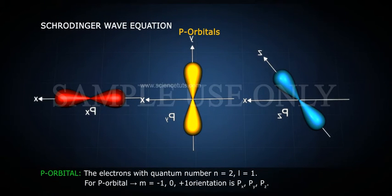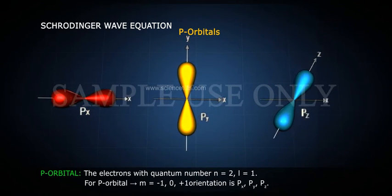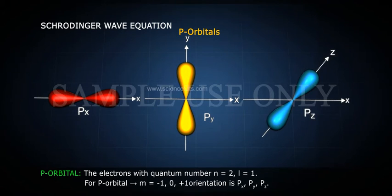P orbital. The electrons with quantum number n is equal to 2, l is equal to 1. For P orbital, m is equal to minus 1, zero, plus 1. Orientation is Px, Py, Pz.